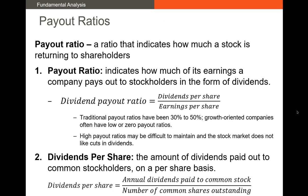The last category is payout ratios — ratios indicating how much cash a stock has returned to shareholders. The classic dividend payout ratio is dividends per share divided by earnings per share. Firms that pay dividends generally have a payout ratio of about 30% to 50%, although most firms do not pay dividends, giving them a payout ratio of zero. Dividends per share is simply total cash paid in dividends divided by shares outstanding.